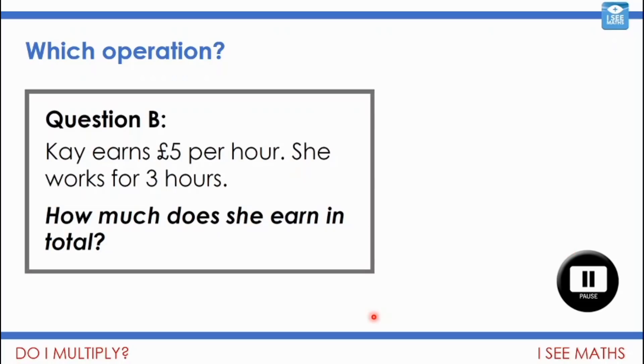Okay, let's have a look at this one. So Kay, if she earns 5 pounds an hour and works for 3 hours, that's 5 pounds for hour 1, hour 2, hour 3. How much does she earn in total? Well, 15 pounds. Of course, this one is a multiplication, 5 times 3.